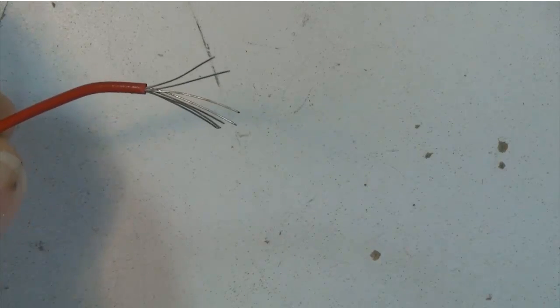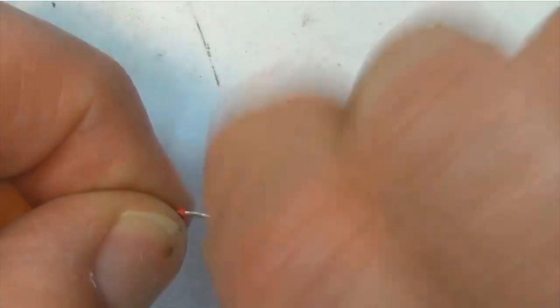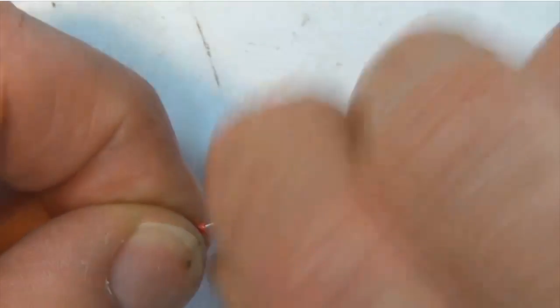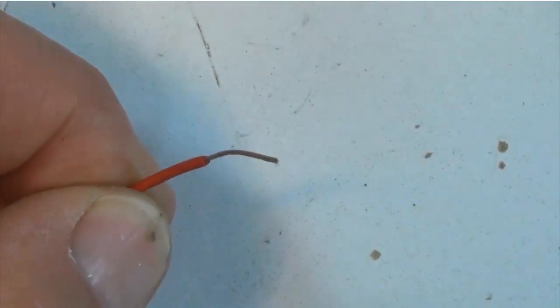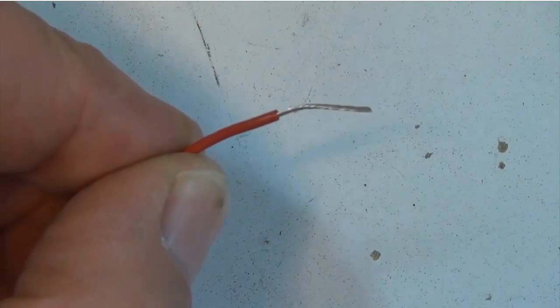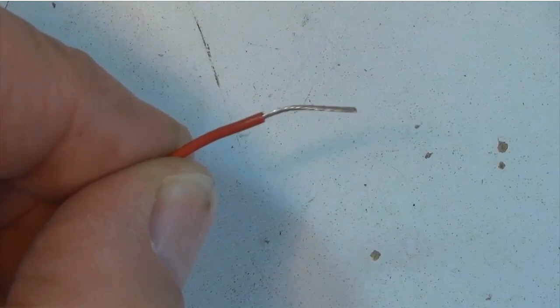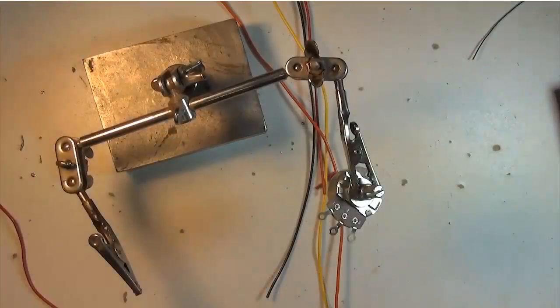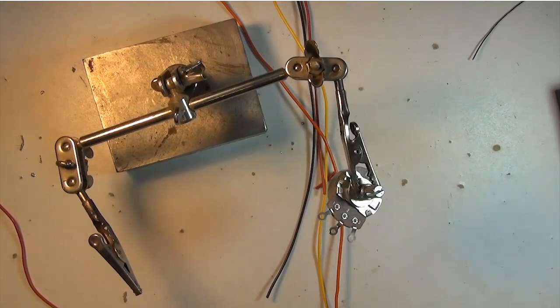To start off with, I always take the stranded wire and I twist the wire strands together. You can twist either clockwise or counter-clockwise - it doesn't much matter. All I want to do is get the wire strands nice and tight together. To simplify my life, I'm going to use these helping hands and hold the potentiometer in one of the alligator clips.